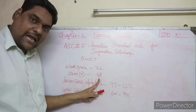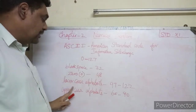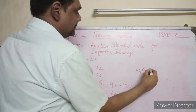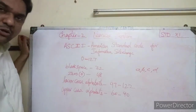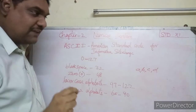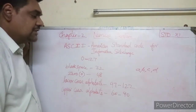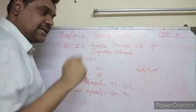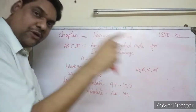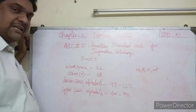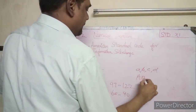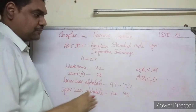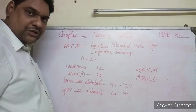The digit zero has an ASCII value of 48. Lowercase alphabets (small letters a to z) have ASCII values from 97 to 122 — small 'a' is 97, small 'b' is 98, small 'c' is 99, up to small 'z' which is 122. Uppercase (capital) letters have values from 65 to 90 — capital 'A' is 65, capital 'B' is 66, up to capital 'Z' which is 90.